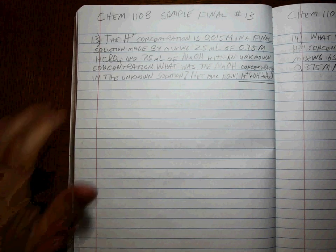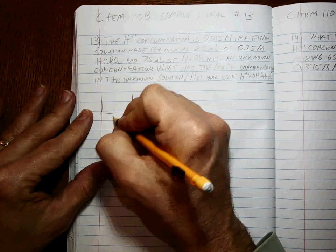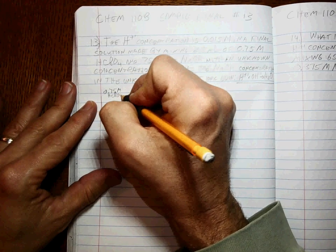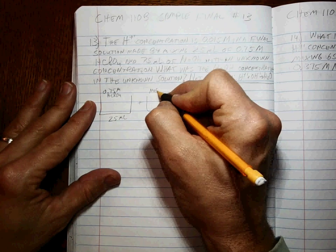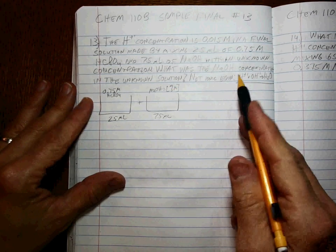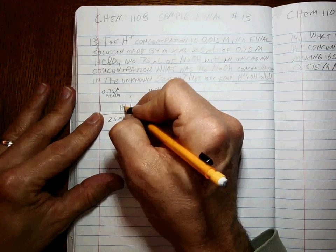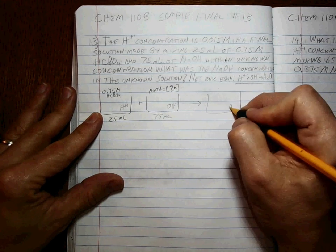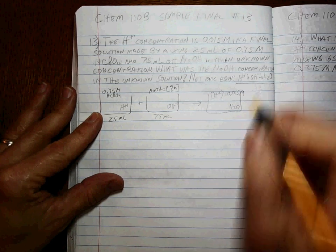The H+ concentration is 0.015 molar in a final solution made by mixing 25 milliliters of 0.75 molar HClO4 and 75 milliliters of NaOH of an unknown concentration. We're going to find out what was the sodium ion concentration in the unknown solution. The net ionic equation is H+ plus OH- goes to H2O, and the H+ concentration at the end is 0.015 molar.